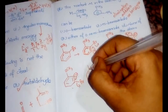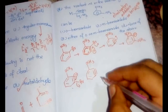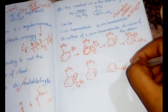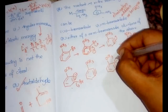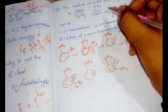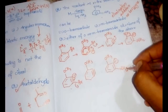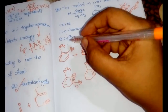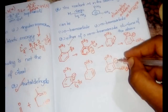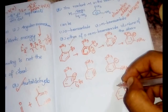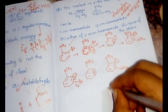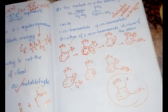With m-bromoanisole, the nucleophile NH₂⁻ attacks such that the negative charge moves to the ortho position relative to OCH₃ for stabilization. Both o-bromoanisole and m-bromoanisole can form the same product with an NH₂ group. Therefore option 3 — both o- and m-bromoanisole — is the correct answer.